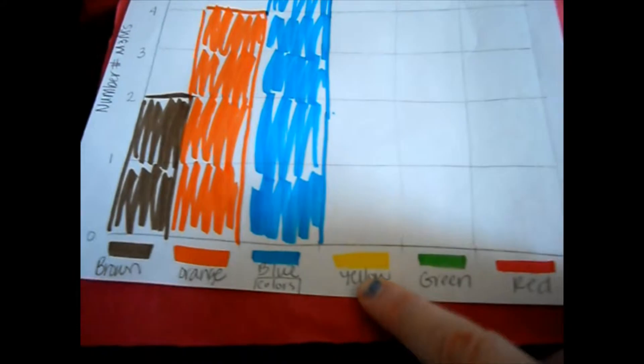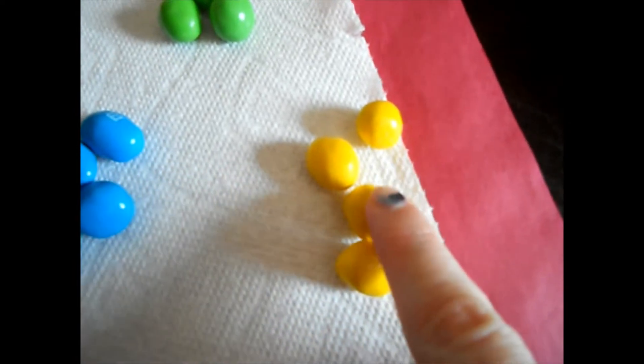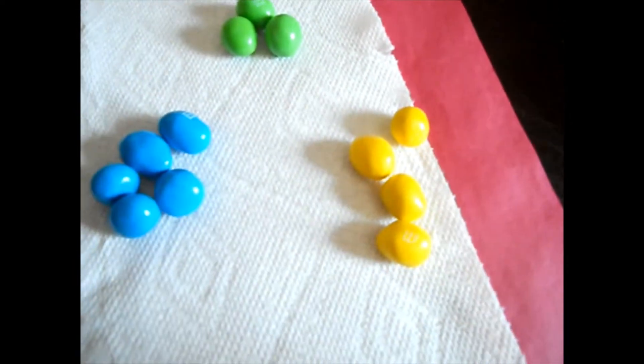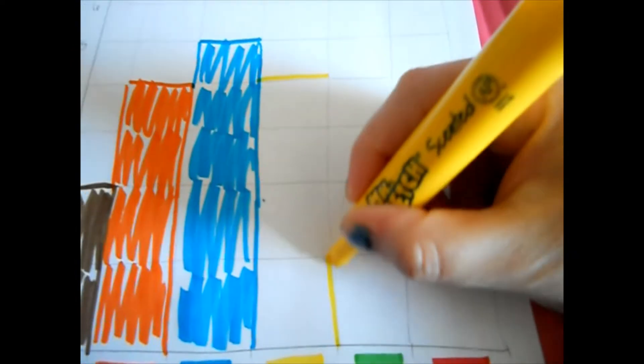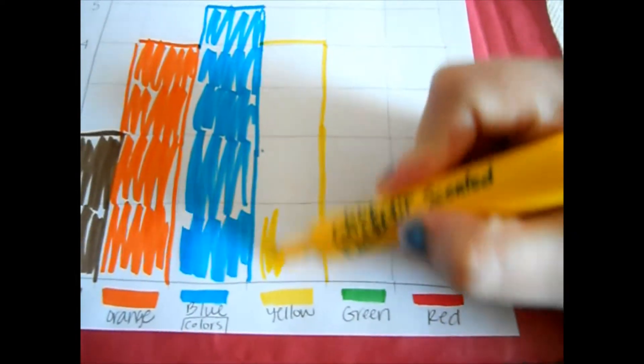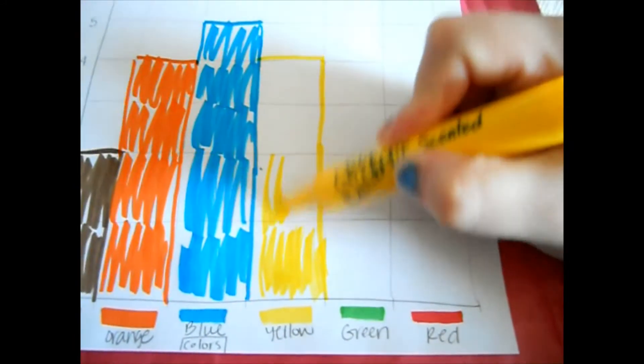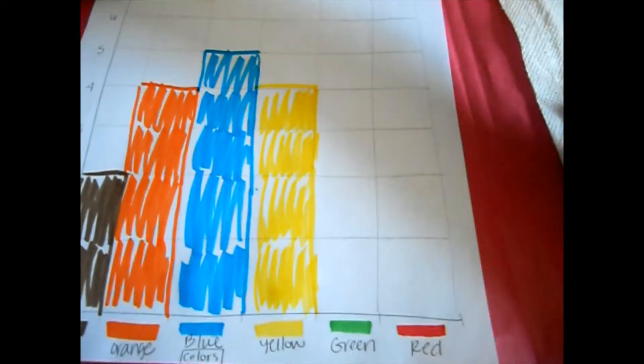The next color is yellow. So why don't we go see yellow? So we say 1, 2, 3, 4. So let's do 1, 2, 3, 4. And then we color them. 1, 2, 3, and 4.